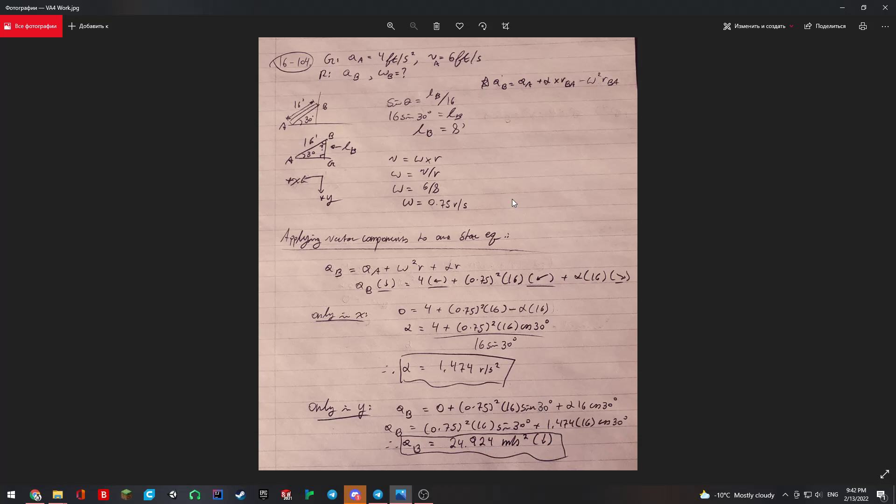Basically, our three values that we obtained are omega, which is 0.75 rads per second, alpha, which is 1.474 rads per second squared, and AB, which is the acceleration in the B direction going down, which is 24.924 meters per second squared. And that's all.